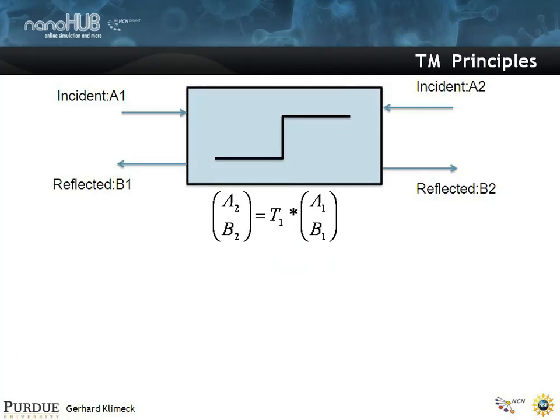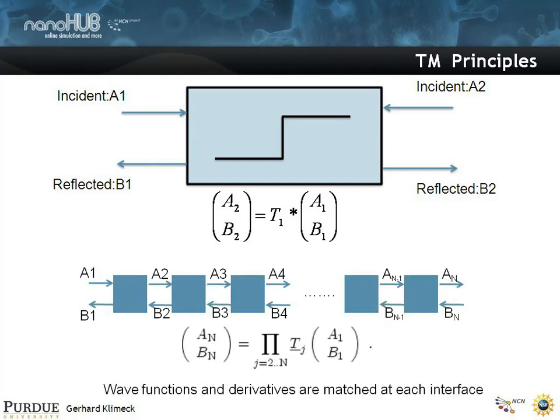The principle we pursue here is that we treat each interface of this device, or each inhomogeneity in this device that we want to consider, as a little scattering matrix — but we treat it with a transfer matrix. So what we have is input A2 on the right and output B2 on the right, which is related through a matrix from input A and B. It's a so-called transfer matrix, which is what we just solved analytically for a single step or single barrier case. You can generalize this by cascading many of these transfer matrices, where the output on the far right A and B are related through products of T and the input on the left.